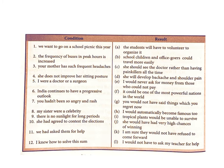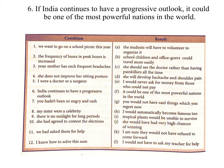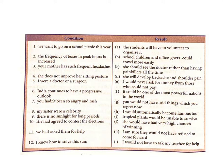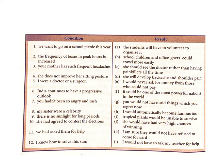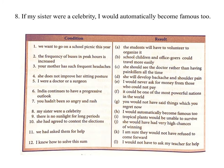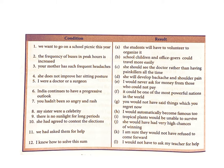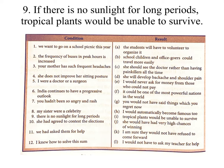6. India continues to have a progressive outlook. Answer: If India continues to have a progressive outlook, it could be one of the most powerful nations in the world. 7. You hadn't been so angry and rash. Answer: If you hadn't been so angry and rash, you would not have said things which you regret now. 8. My sister were a celebrity. Answer: If my sister were a celebrity, I would automatically become famous too. 9. There is no sunlight for long periods. Answer: If there is no sunlight for long periods, tropical plants would be unable to survive.